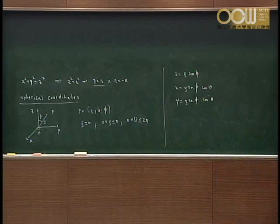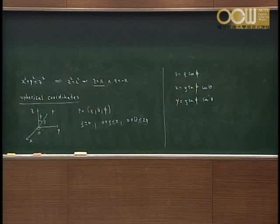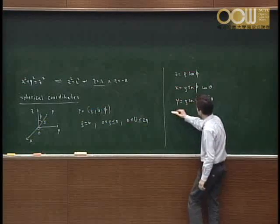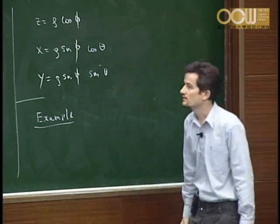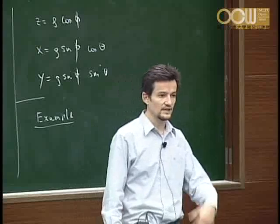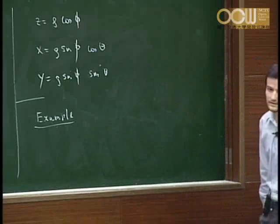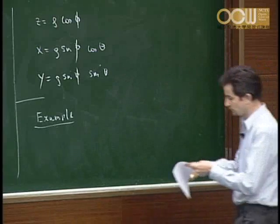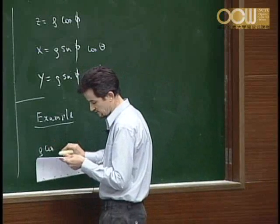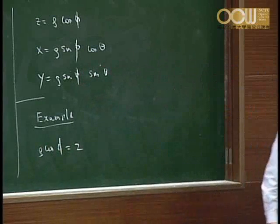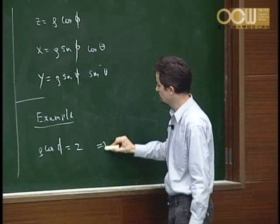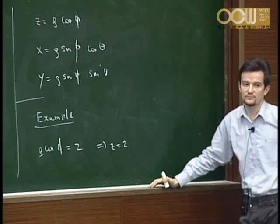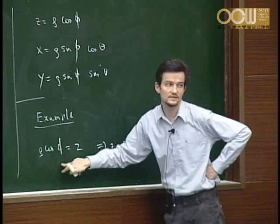For example, ρ cos ζ equals 2 in spherical coordinates just means z equals 2, since ρ cos ζ is z — so it's simply a plane parallel to the xy-plane at distance 2. The sphere given in Cartesian coordinates by x squared plus y squared plus z squared plus 2z equals 0 becomes ρ squared plus 2ρ cos φ equals 0 in spherical coordinates, or ρ equals −2 cos φ.